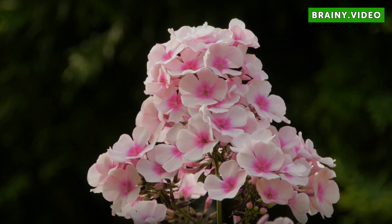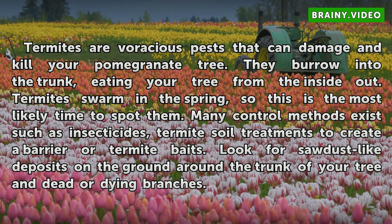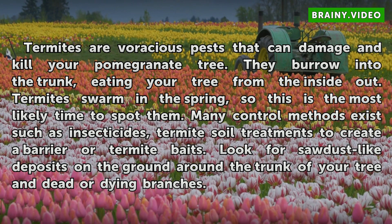Trunk or wood damage. Termites are voracious pests that can damage and kill your pomegranate tree. They burrow into the trunk, eating your tree from the inside out. Termites swarm in the spring, so this is the most likely time to spot them. Many control methods exist, such as insecticides, termite soil treatments to create a barrier, or termite baits. Look for sawdust-like deposits on the ground around the trunk of your tree and dead or dying branches.